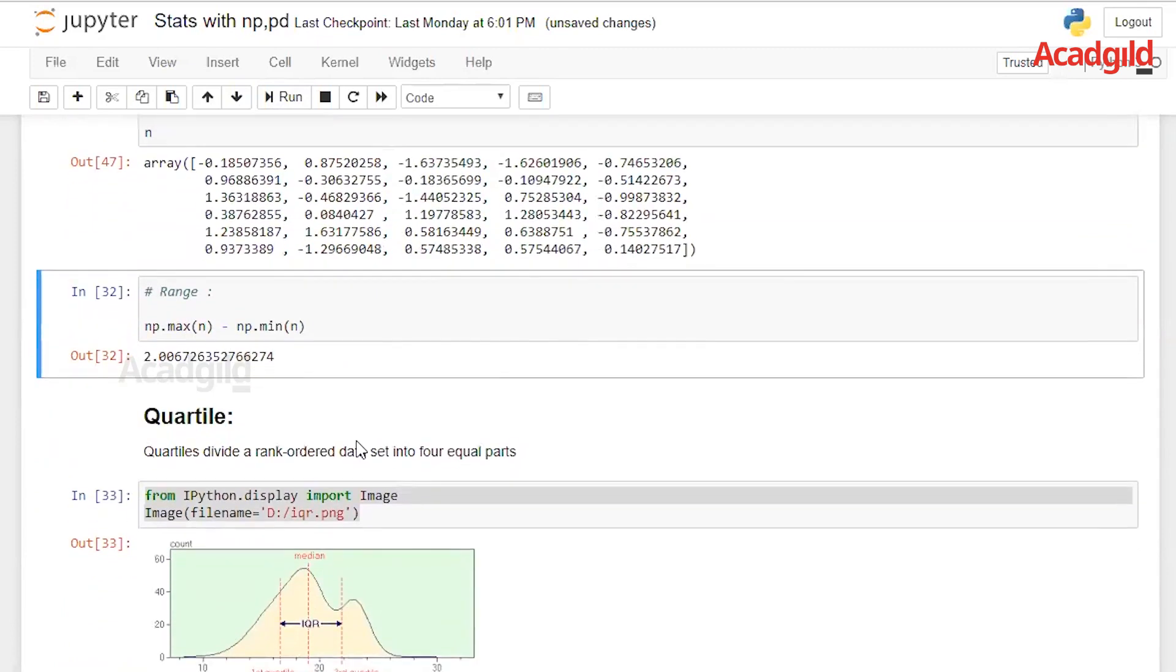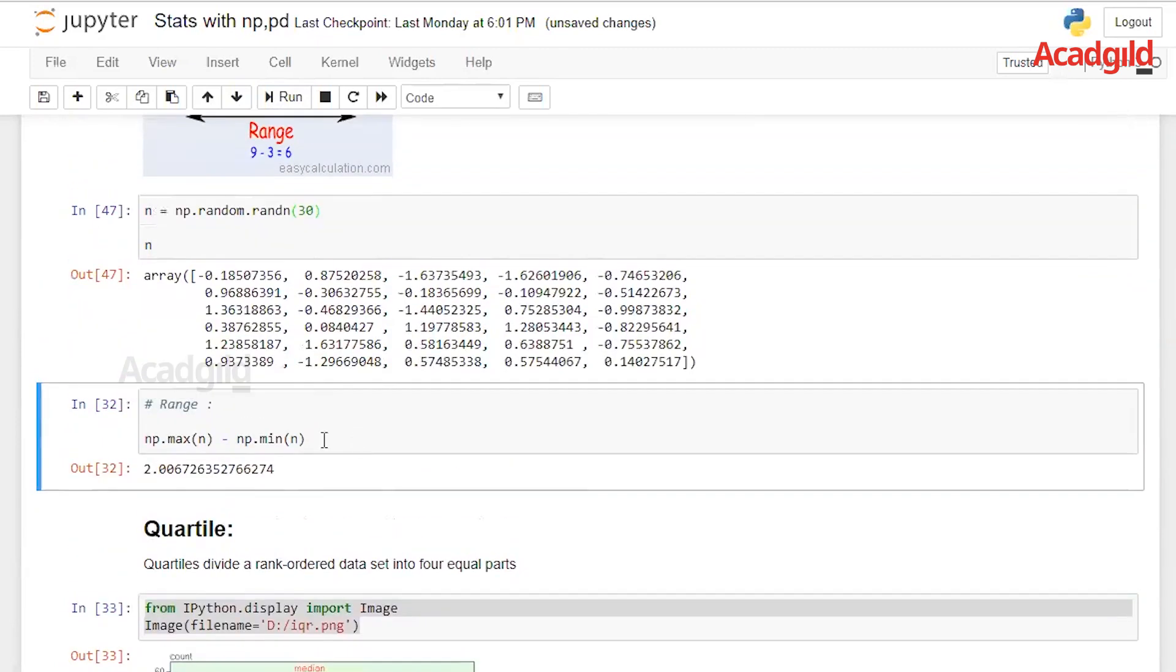We get randomly normally distributed random numbers. And to calculate the range for this, we will take the maximum value, which is a module under numpy, and minimum, which is another module under numpy. We take the difference between them to get the range.